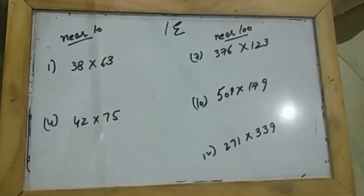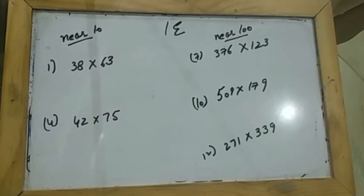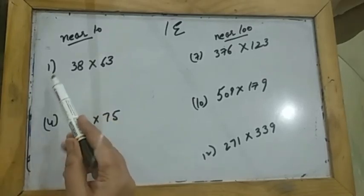OK class, now we will start with Exercise 1a. This is again on estimation. In Exercise 1b we estimated the sum and the difference. Now in this exercise we will estimate the product — when we multiply, the answer we get is called the product.